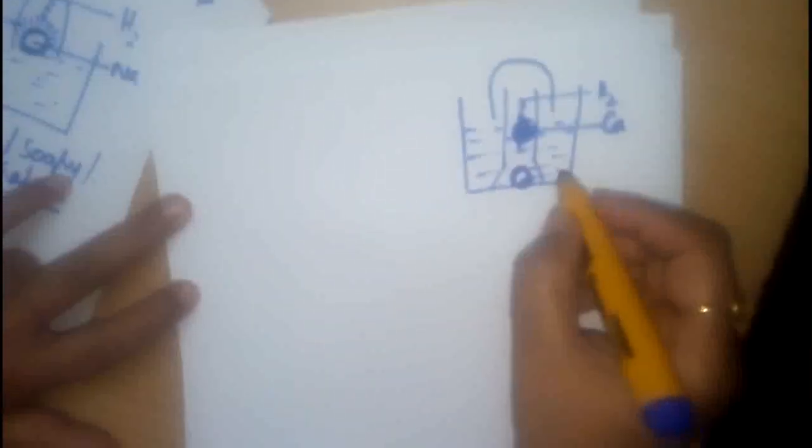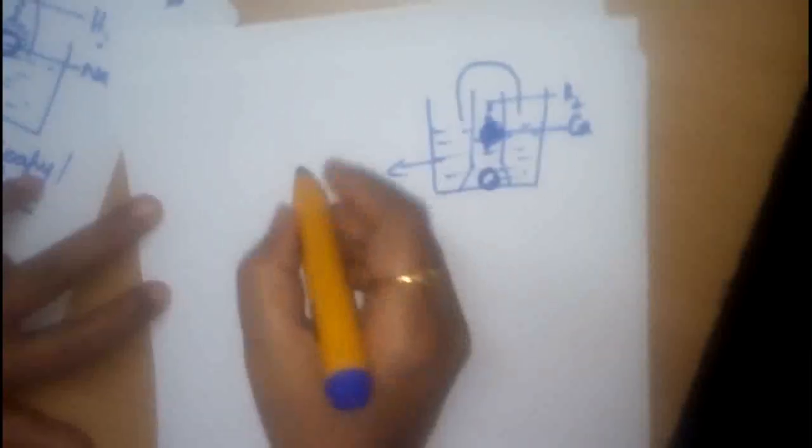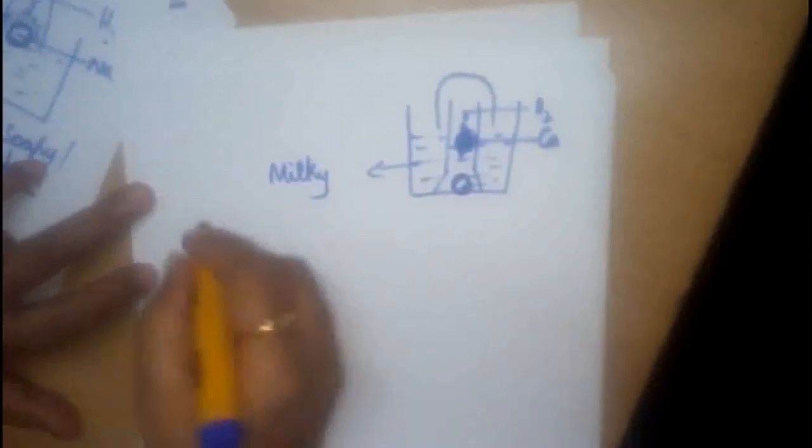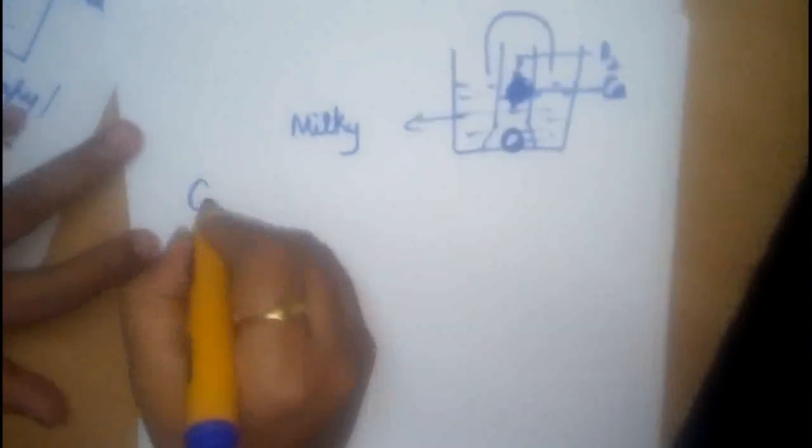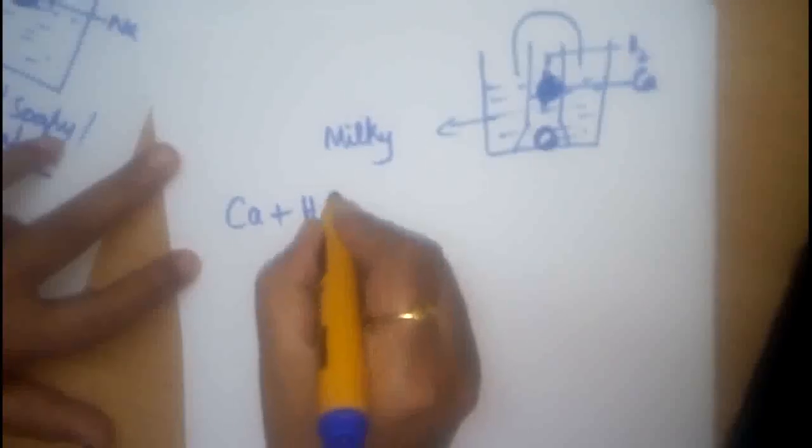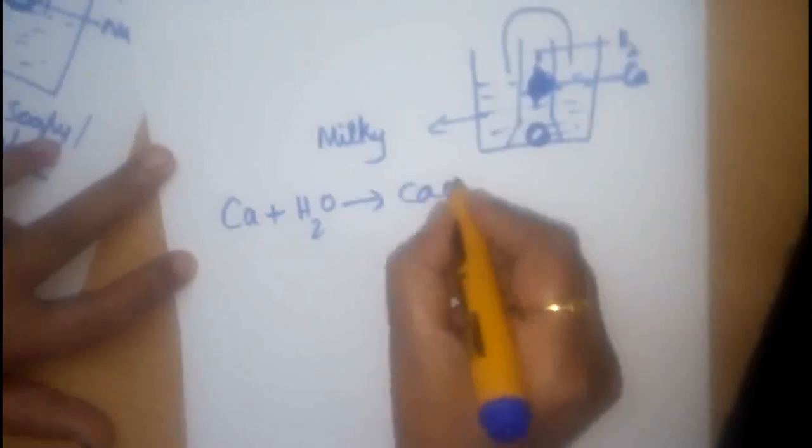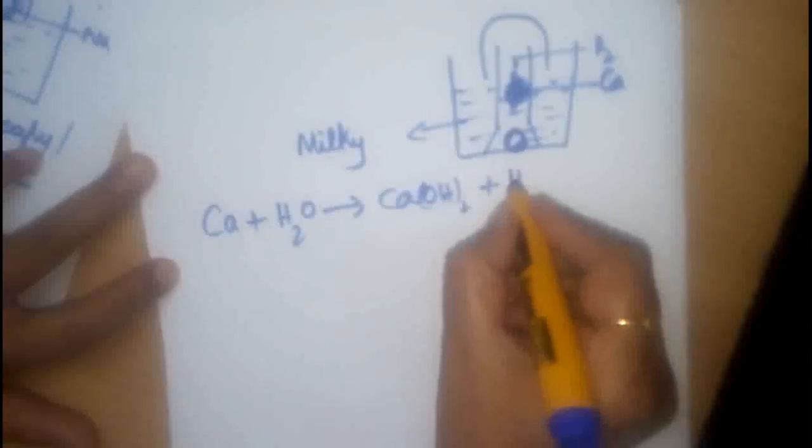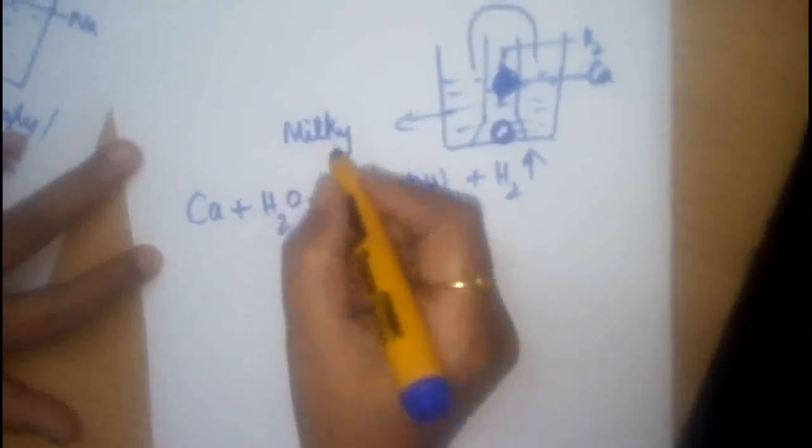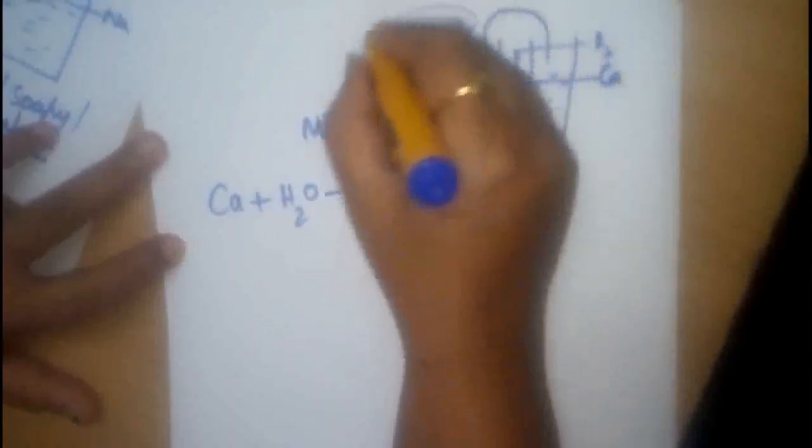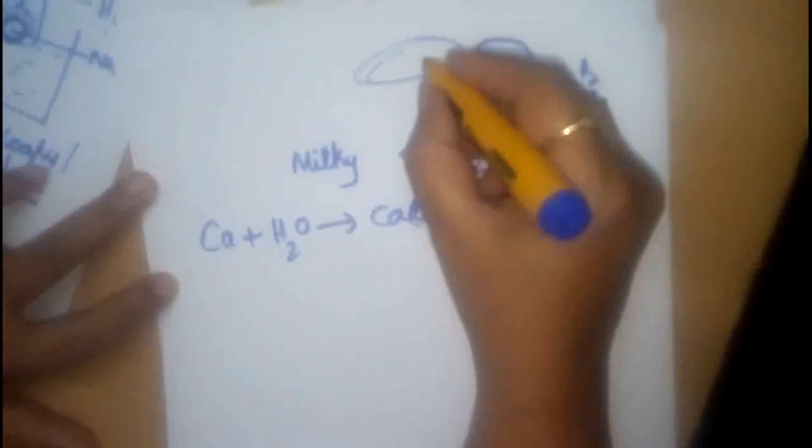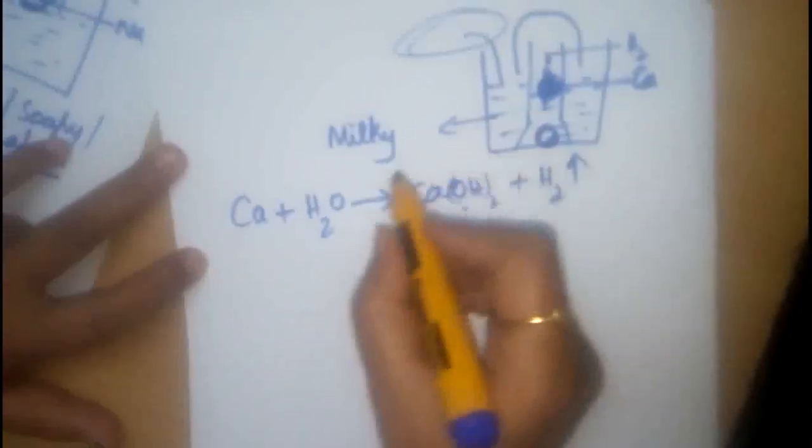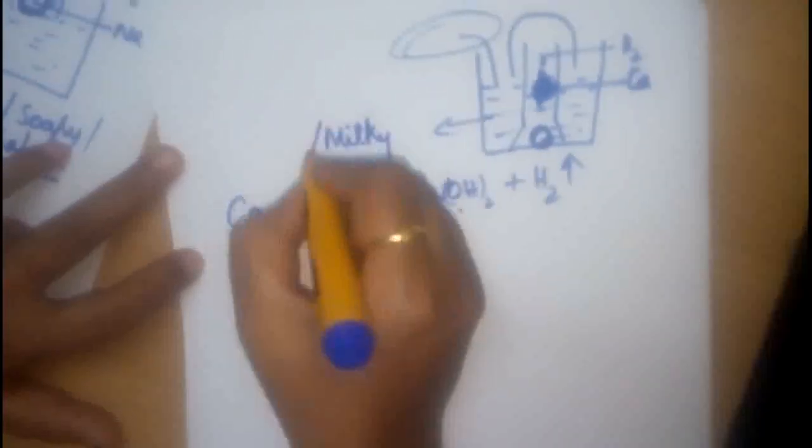The solution here is also, it is milky. Actually, the reaction is something like this. Calcium reacts with water to form calcium hydroxide. But calcium hydroxide is not milky. It turns milky because of the presence of carbon dioxide outside. It reacts with calcium hydroxide and converts the solution to milky and turbid.